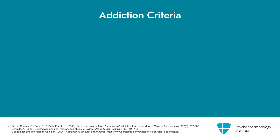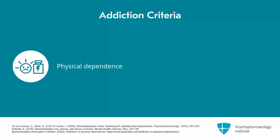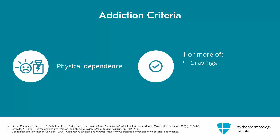Breaking this down into the different criteria for a use disorder: while there are the physical dependence criteria of tolerance and withdrawal, it must also impact one or more of the other criteria, categorized as the three Cs. These are: cravings — the strong urge or desire to use; loss of control of use; and consequences from substance use, including social consequences impacting relationships, occupational impacts on work, recreational impacts, as well as negative effects on one's psychological or physical health.